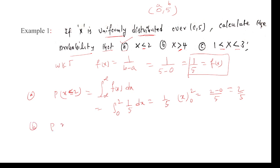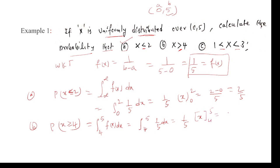For P(X ≥ 4): the limits are from 4 to 5, since the maximum limit given is 5. So the integral from 4 to 5 of f(x) dx equals the integral from 4 to 5 of (1/5) dx. Taking 1/5 outside, integrating gives x from 4 to 5, so upper limit 5 minus lower limit 4, divided by 5, equals 1/5.